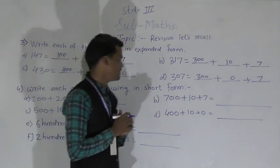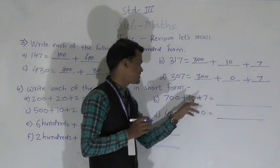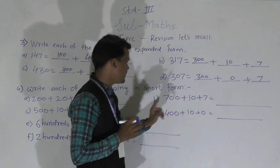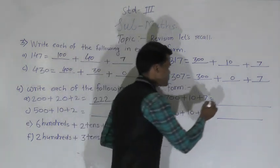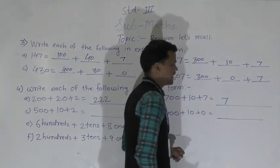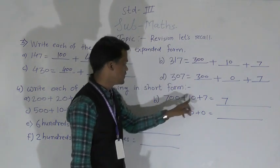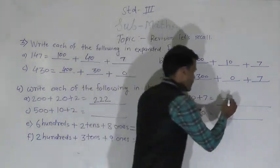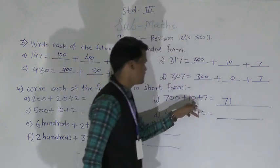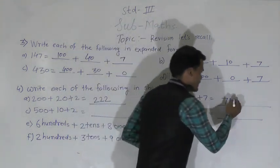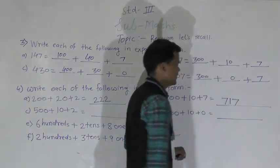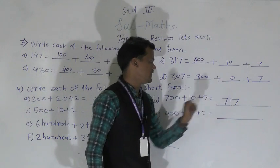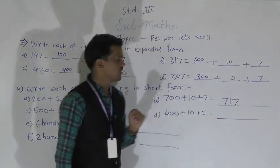Then: 700 + 10 + 7. This is a very simple concept. 700 means write 7 at the hundreds place. 10 means 1 ten, so write 1 at the tens place. And write 7 at the ones place. So the number formed is 717.